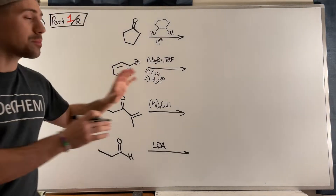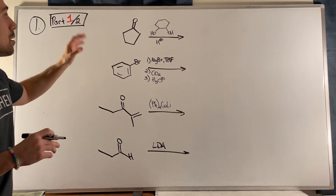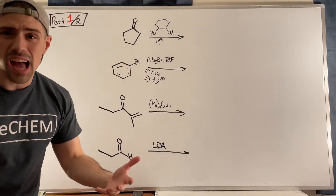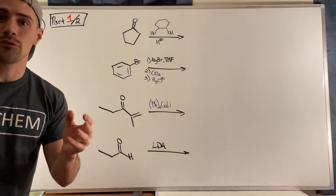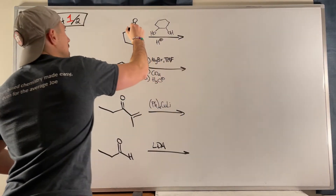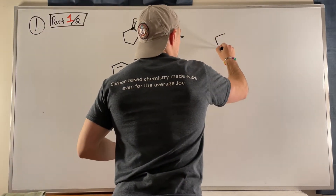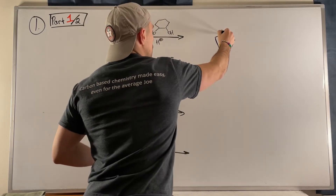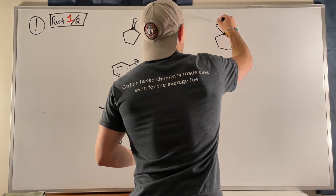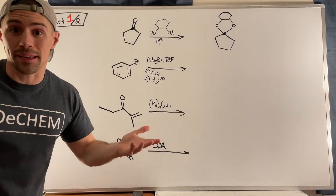Rolling into the first problem on exam two, part one of two — the first four complete-the-reaction questions. Up top we have a regular ketone, cyclopentanone, paired with a diol and acid. This is acetal formation to a T. You protonate the carbonyl oxygen, go through the whole acetal formation mechanism, and the carbonyl oxygen disappears while bonds form to the two oxygens. Those two oxygens happen to be attached to a six-membered ring, so the product looks strange but it's just acetal formation.